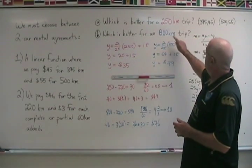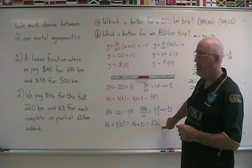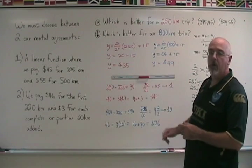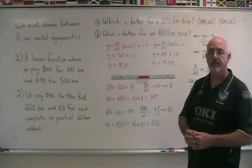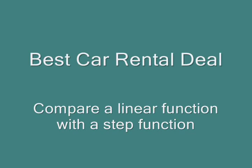For the 800 kilometer trip, it is a better deal to use car rental agreement number 2, which costs us $76, whereas rental agreement 1 would have cost $79.